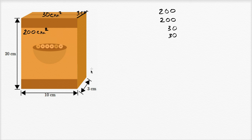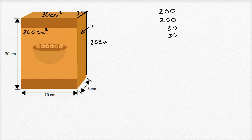Then we have two more sides, because this box has six sides. We have this side panel that is 20 centimeters tall and three centimeters deep. Three centimeters times 20 centimeters gives us 60 square centimeters. That's this side panel, but there's another side panel with the exact same area on the other side of the box, so that's another 60 square centimeters for the corresponding opposite side that we can't see.